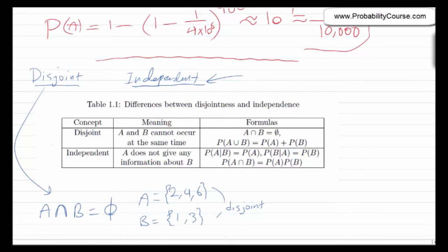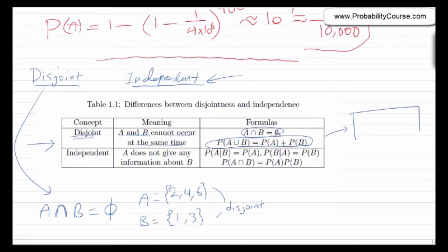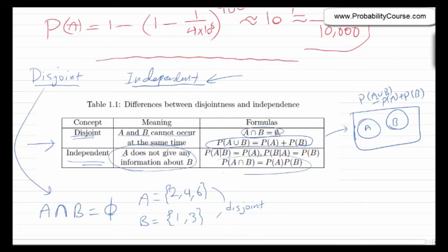This table summarizes the difference between these concepts. If two events are disjoint, A and B cannot occur at the same time: their intersection is empty, and probability of A union B equals probability of A plus probability of B. If two events are independent, A does not give any information about B, and probability of A intersection B equals probability of A times probability of B.